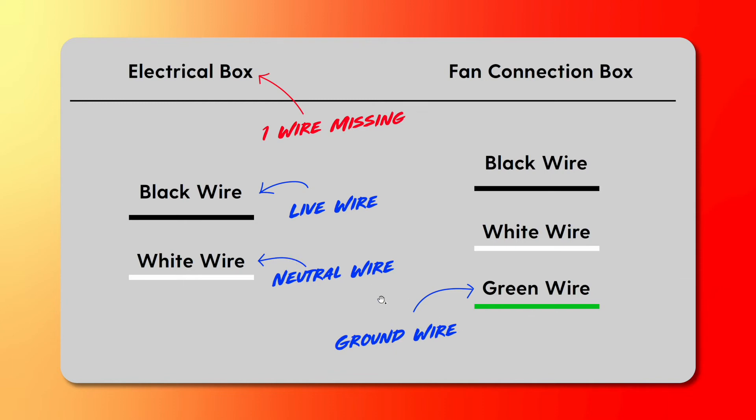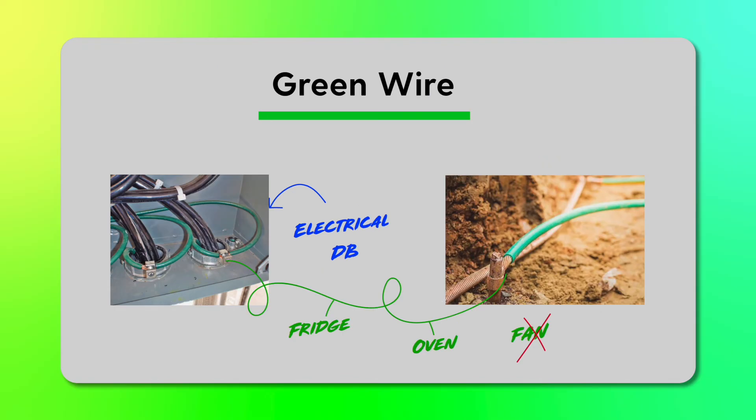That is why we don't neutralize the white wire, but we keep a separate wire which is the ground wire, the green wire. So what happens is all of the DBs and the electrical distribution boxes, they are physically connected with this green line.